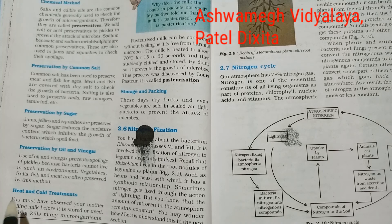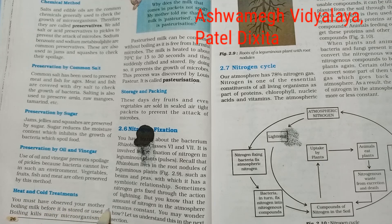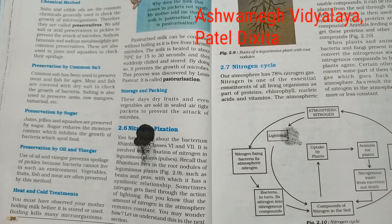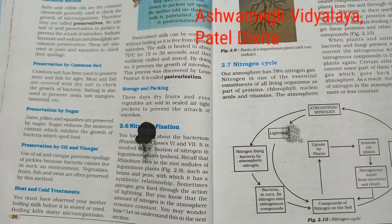Now the fifth method of food preservation is heat and cold treatment. You must have observed your mother boiling milk before it is stored or used. When we boil milk, we give it heat, which raises the temperature and kills the microorganisms present in it.